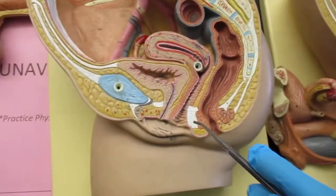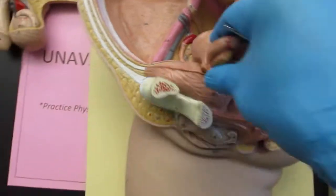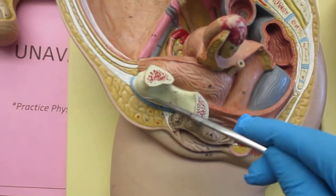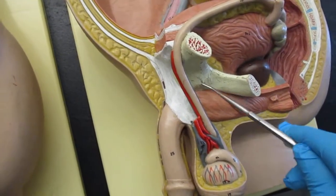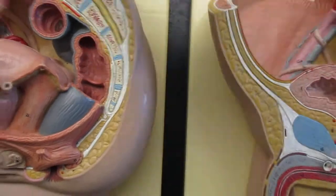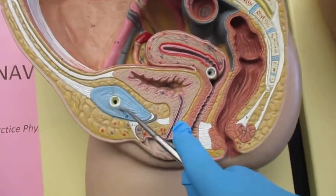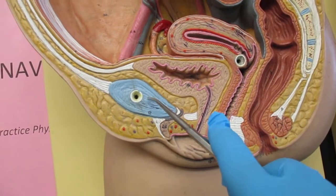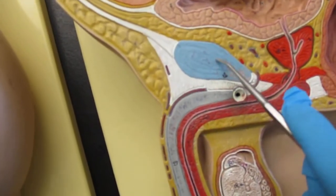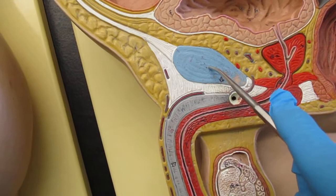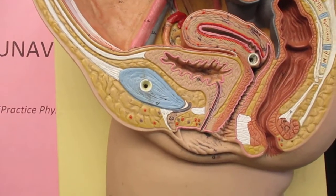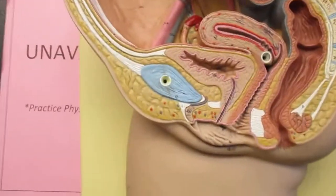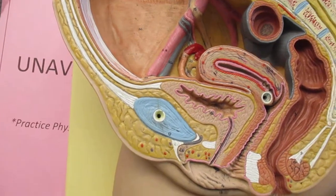We have the pubic bone — this is the pubic bone for the female, and this is the pubic bone for the male. The pubic symphysis is right here for the female and right here for the male. The pubic symphysis is fibrocartilage and it's located between the pubic bones.